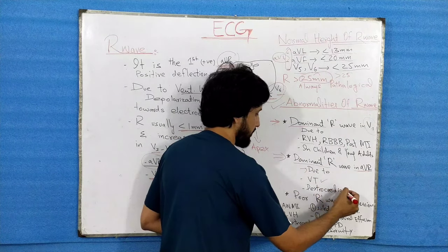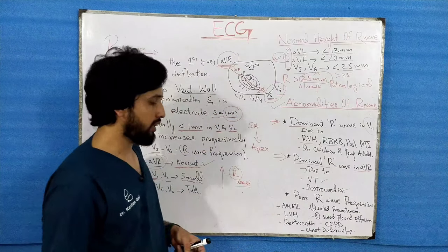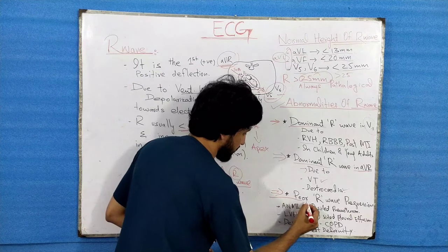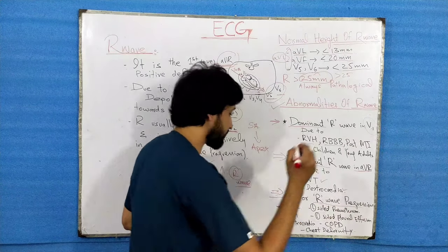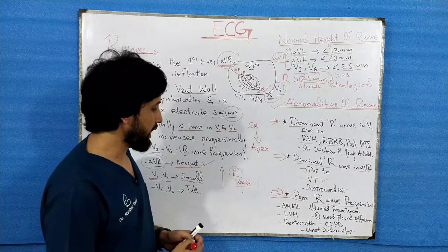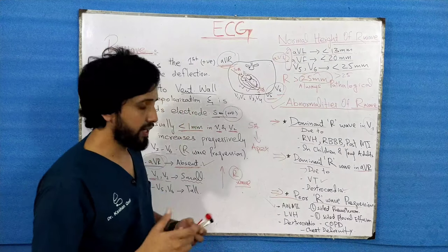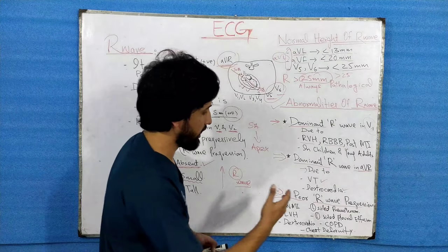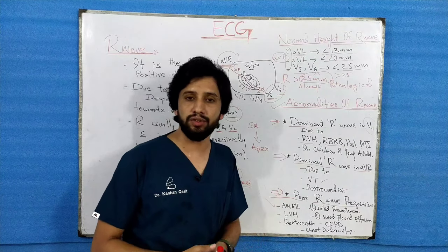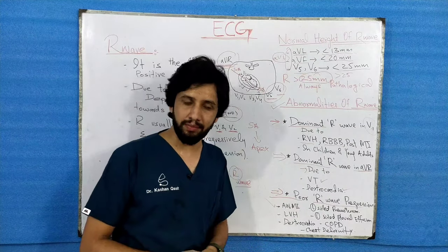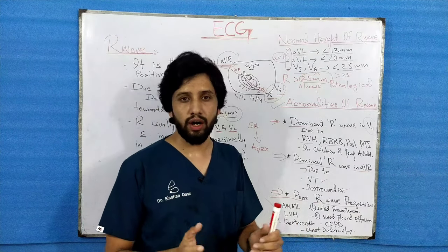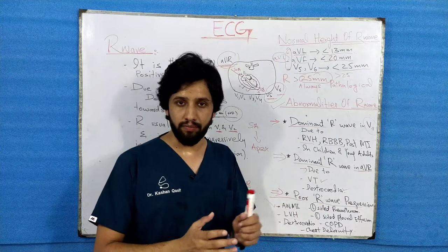A dominant R wave in AVR can be due to ventricular tachycardia or dextrocardia. The third abnormality is poor R wave progression, which is also abnormal behavior on an ECG. Poor R wave progression can be due to anterior wall MI, LVH, dextrocardia, left-sided pneumothorax, left-sided pleural effusion, COPD, lead misplacement, and chest deformity. These are all the abnormalities of the R wave.